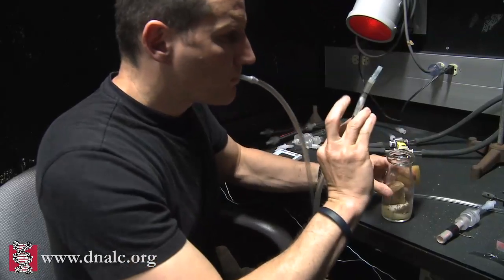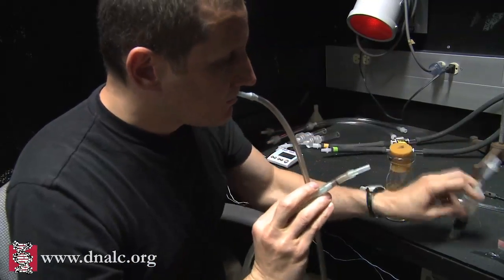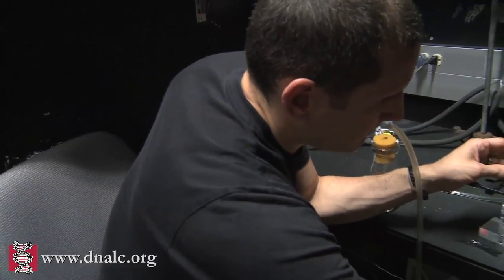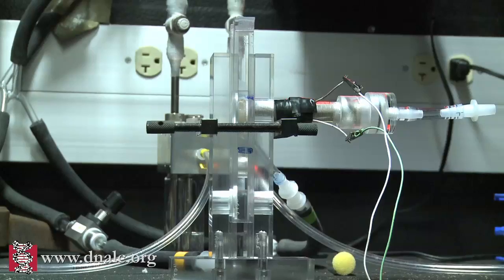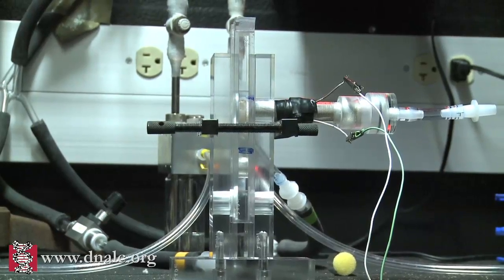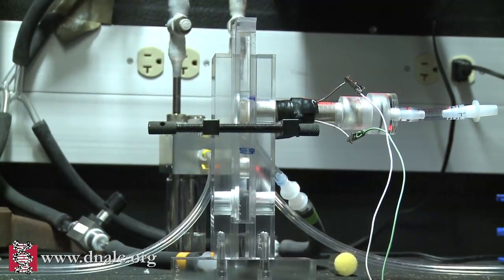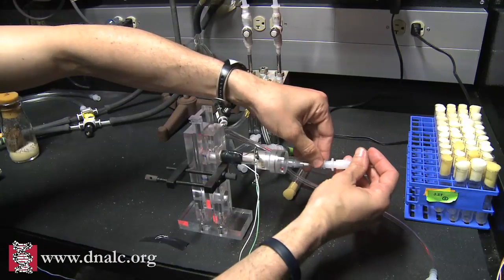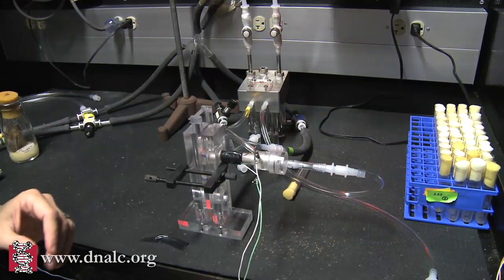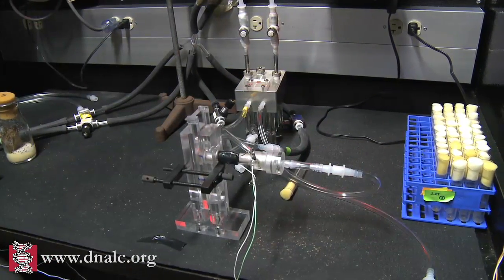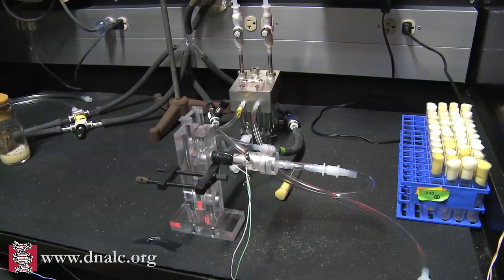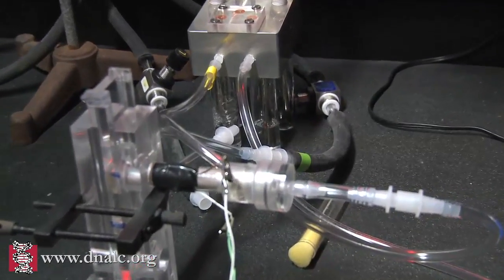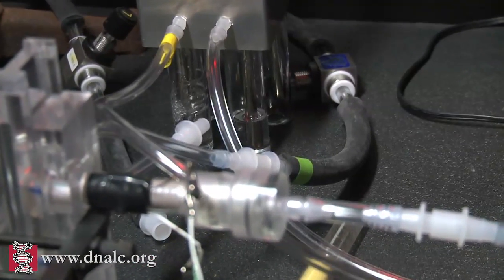The flies are loaded first into the training tube. The training tube has wires connected to it, and we can deliver electric shock and deliver odors on an air current through the training tube. When we connect the odors, the flies smell the odor on an air current. You'll see the bubbles bubbling through the mineral oil in the machine in the back that we call the bubbler, and that's delivering the OCT to the training chamber.